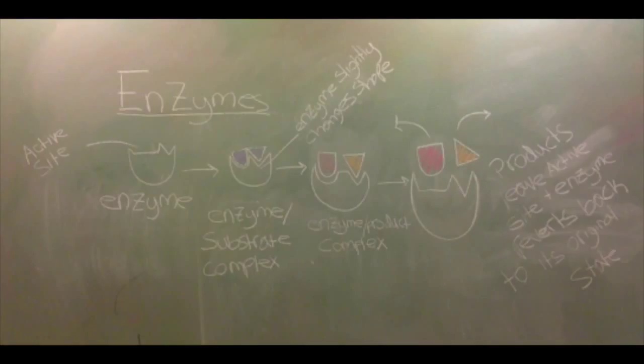And, in my diagram, there are two products. The little, I guess, semi-circle thing, and the triangle are now two separate things instead of one, so those are my products. And then, they end up leaving the active site, and the enzyme goes back to its original shape.